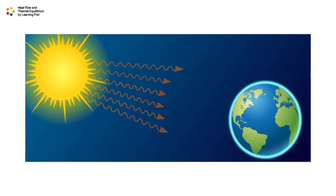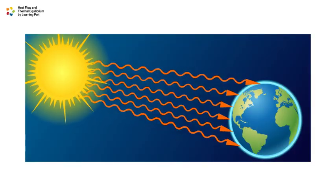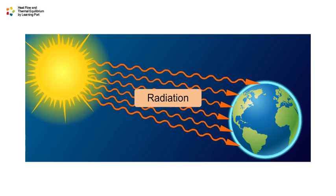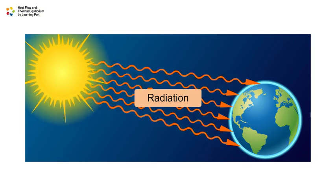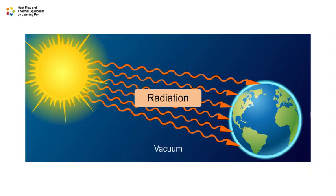The heat from the sun is transferred to earth by radiation. This is one type of heat flow. Radiation allows heat to flow in a vacuum.